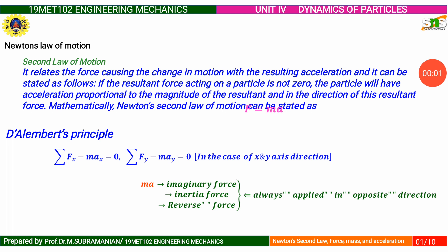D'Alembert's Principle states that the system of external forces acting on a body in motion is in dynamic equilibrium with the inertia force of the body. Mathematically, we can state that as: summation of all forces in x direction minus mass into acceleration in x direction equals zero. Similarly, summation of all forces in y direction minus mass into acceleration in y equals zero. The MA is an imaginary force, or inertia force, or reverse force. The inertia force is always applied in the opposite direction.